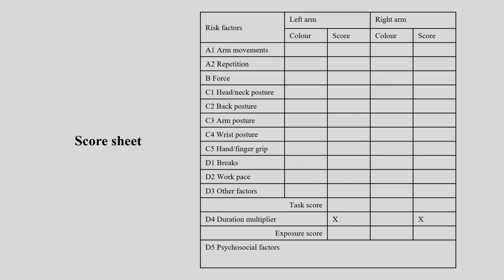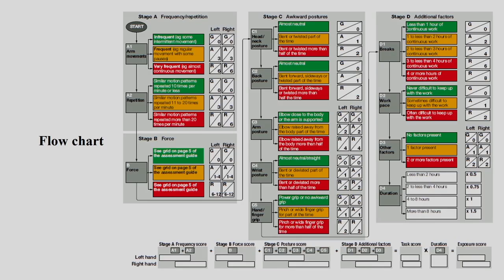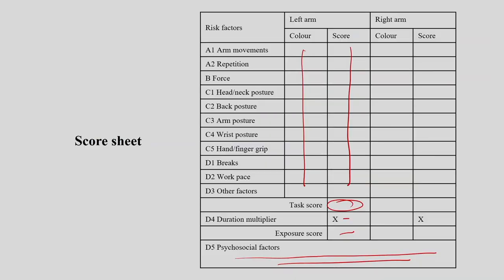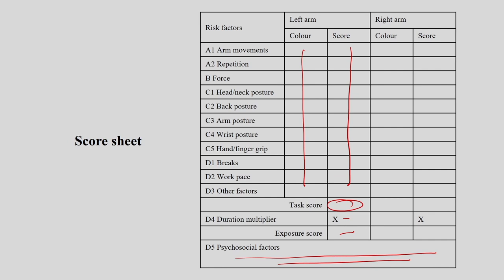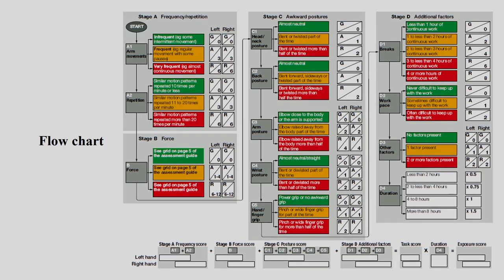The score sheet allows you to enter colour values and score values, obtain the total, apply the multiplier, and calculate the exposure score. Psychophysical factors are mentioned on the sheet with no scoring. The flowchart can also guide data collection. It is suggested to use the data collection chart first, then transfer scores to the score sheet to calculate the final value. This is a very easy tool, easy to learn and easy to implement.